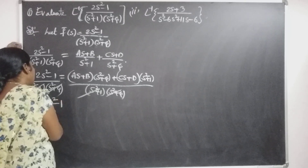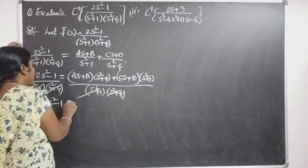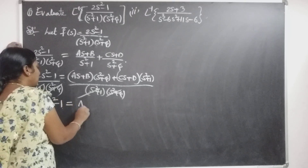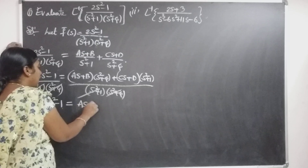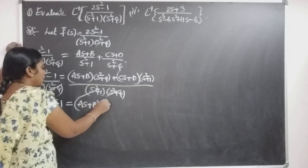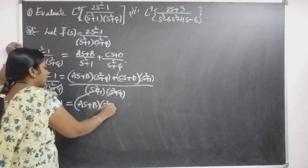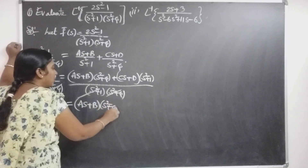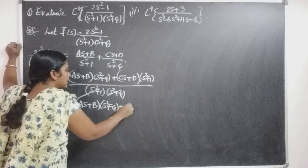Then the numerator gives: 2s² − 1 = (As + B)(s² + 4) + (Cs + D)(s² + 1). Collecting terms: the s³ coefficient is A + C, the s² coefficient is B + D, the s coefficient is 4A + C, and the constant term is 4B + D.